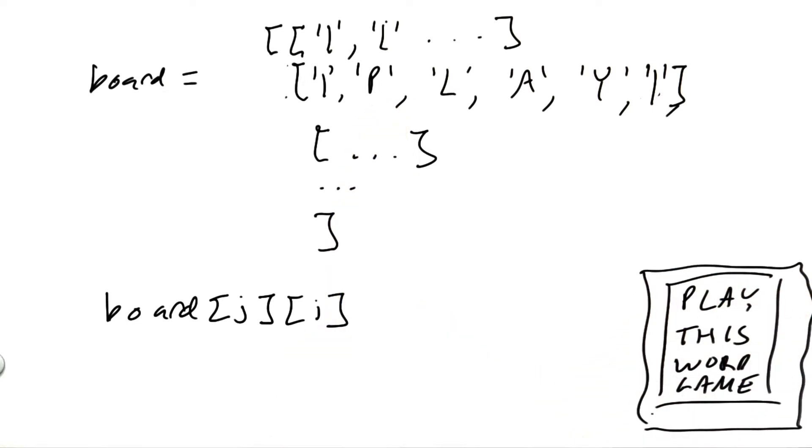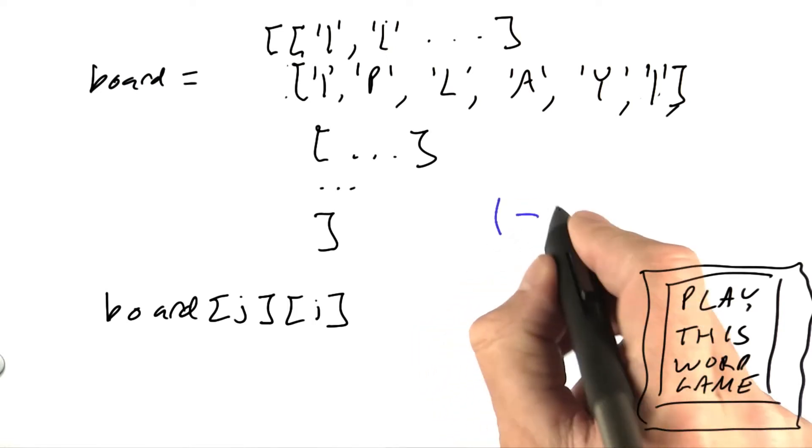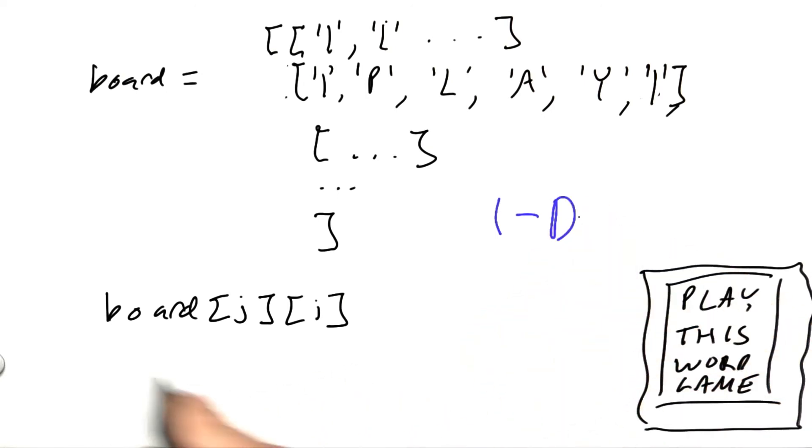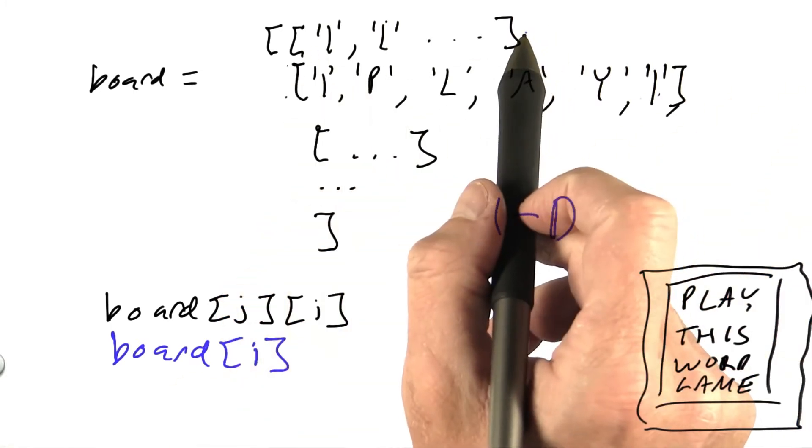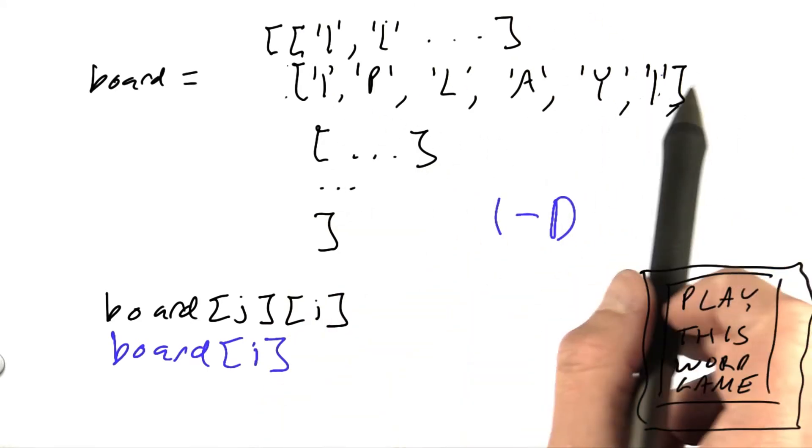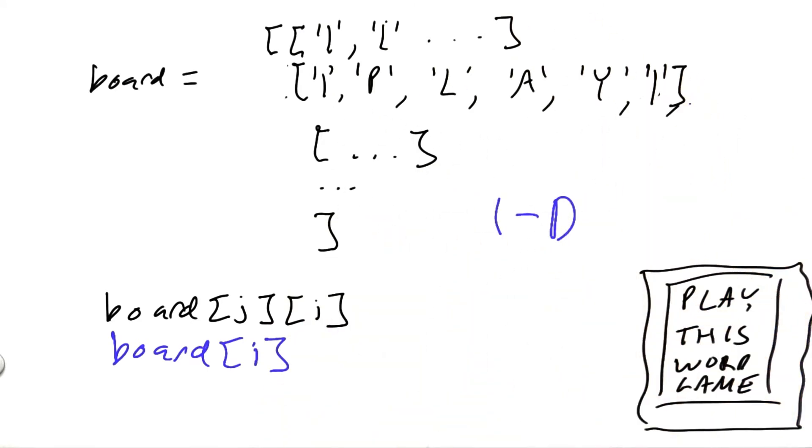This 2D representation would work fine in the Boggle case, but I just want to show you another possibility, which is a one-dimensional representation, where instead of saying board[j][i] for a position, we only have to say board[i], and we get that representation just by concatenating together all the elements. So we take all the elements in the first row, and then add on to that list all the elements in the second row, all the elements in the third, and so on. Now we have a one-dimensional array.